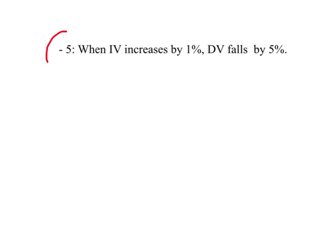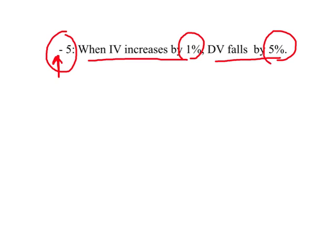Suppose the value of elasticity is given as negative 5. The negative sign indicates a negative relationship between the two variables. The number negative 5 means when the independent variable increases by 1%, the dependent variable falls by 5%; so if the independent variable increases by 10%, the dependent variable falls by 50%. Comparing this elasticity of negative 5 with negative 1, the dependent variable is less responsive to changes in the independent variable in the second case. Thank you for your time.